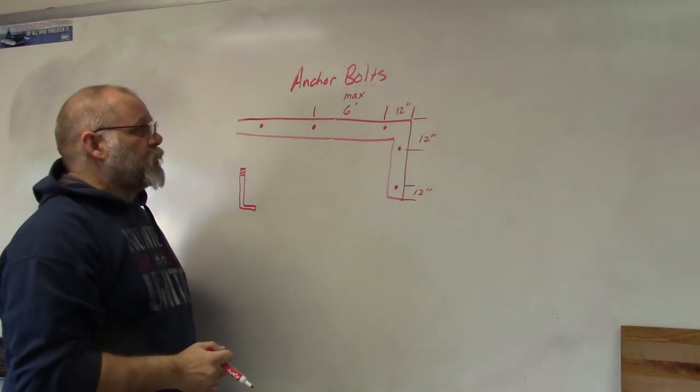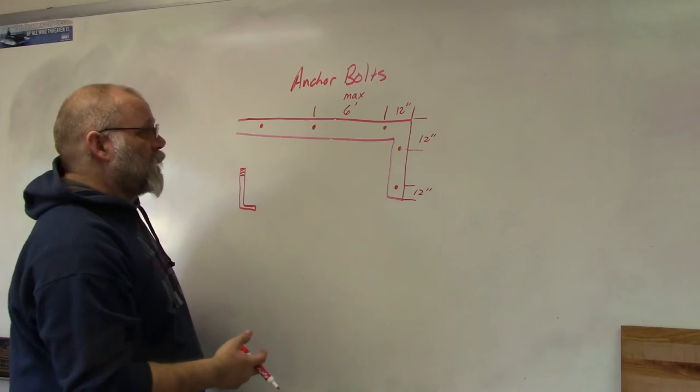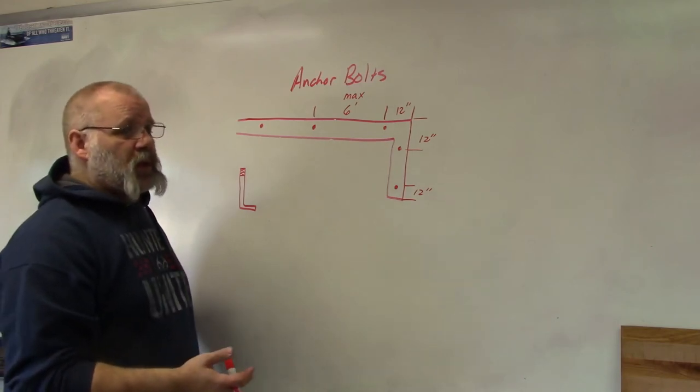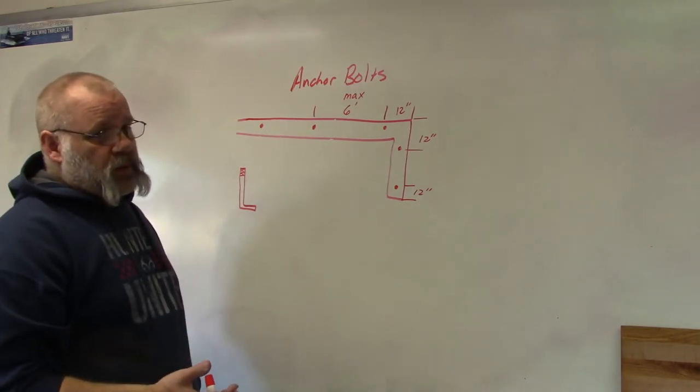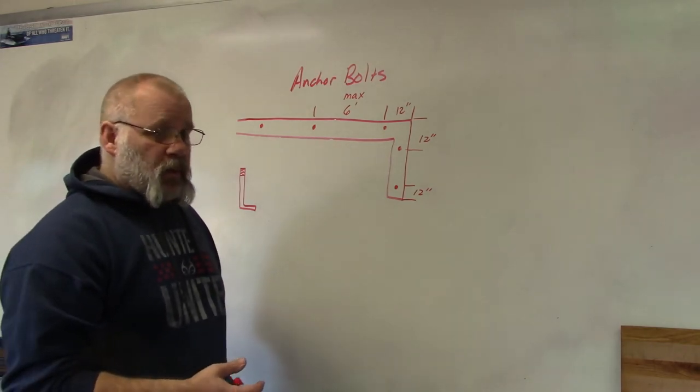If you live in a high wind area or something else, they may say you have to have an anchor bolt every three feet or every four feet. Just check your local building codes for whatever the code says.